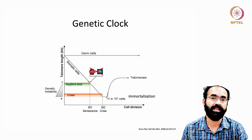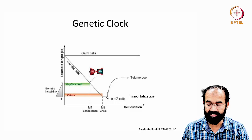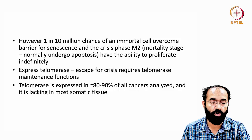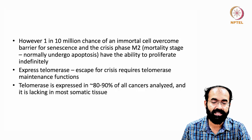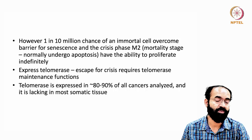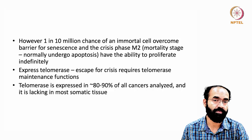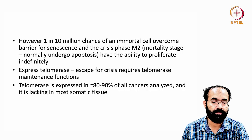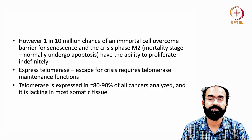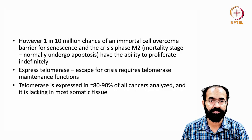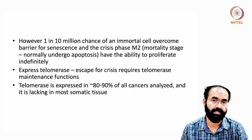The presence of telomerase ensures that the cell will not reach the Hayflick limit or crisis phase. There is a 1-in-10-million chance of an immortal cell overcoming the barrier for senescence and the M2 crisis phase. M1 phase crisis corresponds to the Hayflick limit; once the telomere reaches a critically low length due to continued cell division, it enters M2, the second and final crisis phase. In M2, the cell undergoes death — apoptosis.